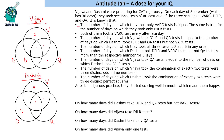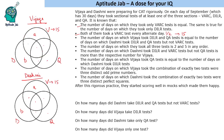Both of them took a VARC test every alternate day, meaning once in two days, so on 15 days each they will take the VARC test. This means the complete VARC circle for each person should add up to 15.